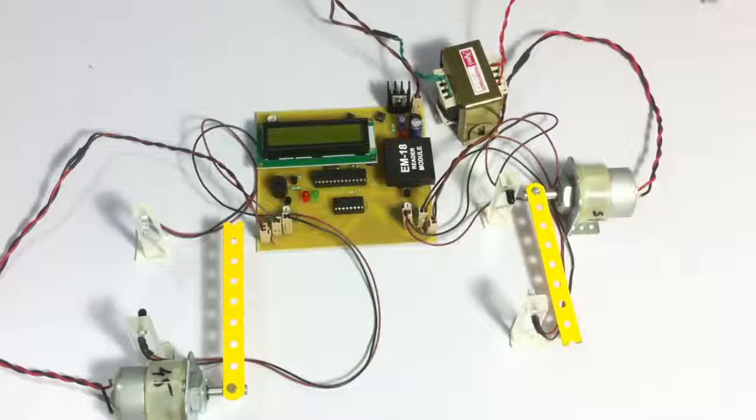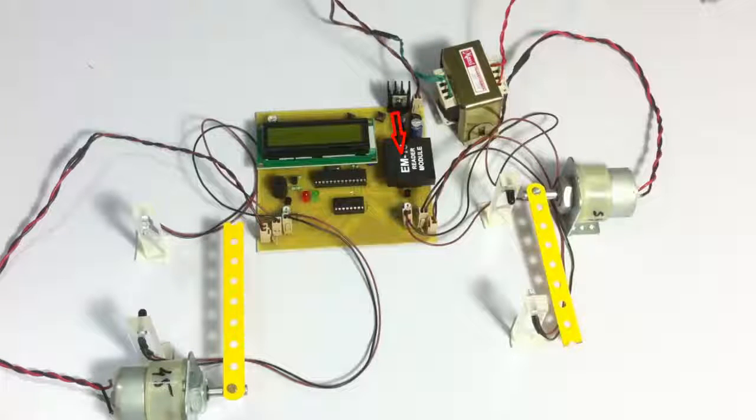The microcontroller is interfaced to an LCD display to show the status of the system as well as an RFID receiver module which is used to detect RFID tags to indicate various vehicles. The entire system is powered by a 12-volt transformer.